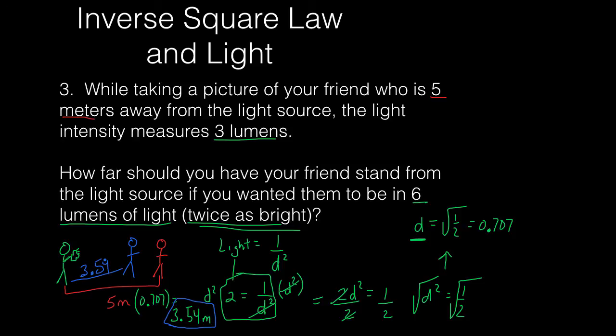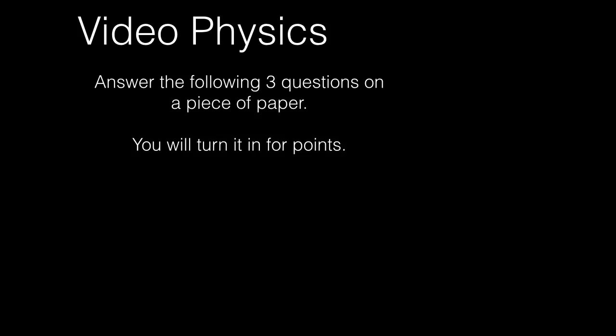Photographers use the inverse square law all the time in figuring out how much light they want to put on their subject when taking pictures. It's just another example of how the inverse square law can be used in science. In your video physics assignment there are three questions very similar to the ones we've just gone through.